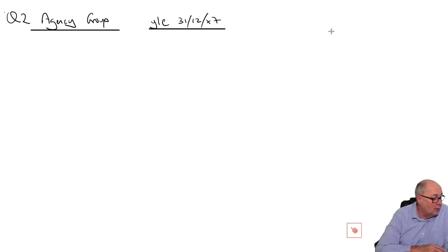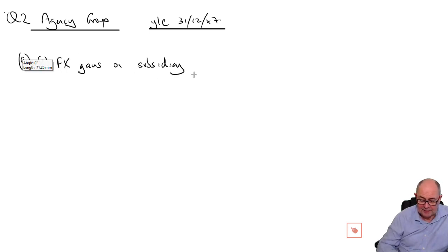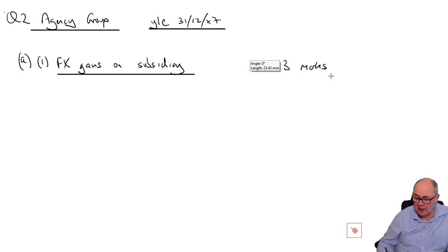The first thing that was asked about was the appropriateness of the accounting treatment on foreign exchange gains on a subsidiary. It was only a couple of marks, so A1 was about FX gains on a subsidiary, 3 marks. As always, when in doubt, start with your knowledge and then try and apply it.